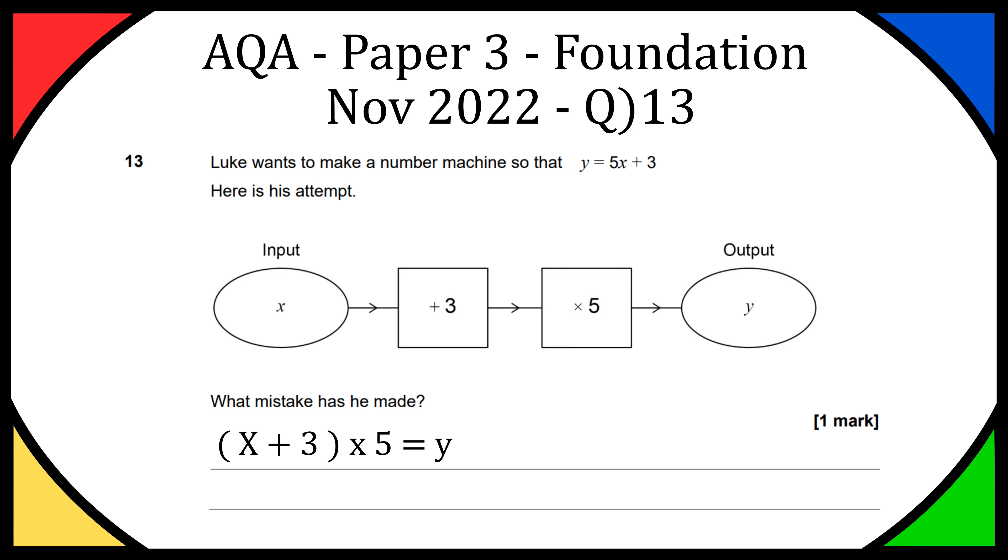That's basically what you need to write as the answer. I've written: he added 3 and then multiplied by 5, but he should have multiplied by 5 and then added 3. So that was a one mark question and that should get you your mark.